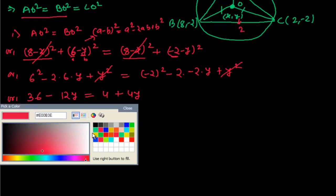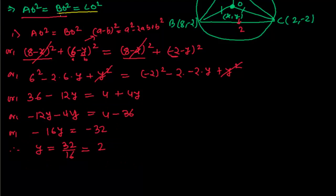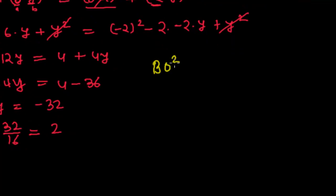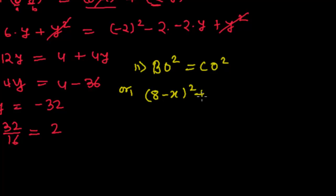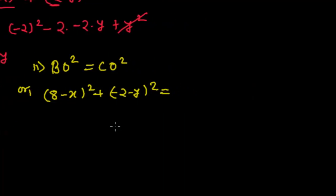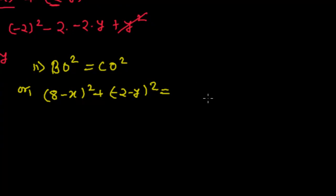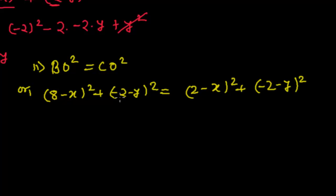Now to find x, let me take BO² = CO². So BO² = (8 - x)² + (-2 - y)², and CO² = (2 - x)² + (-2 - y)². Since both have the (-2 - y)² term, we can cancel it from both sides.